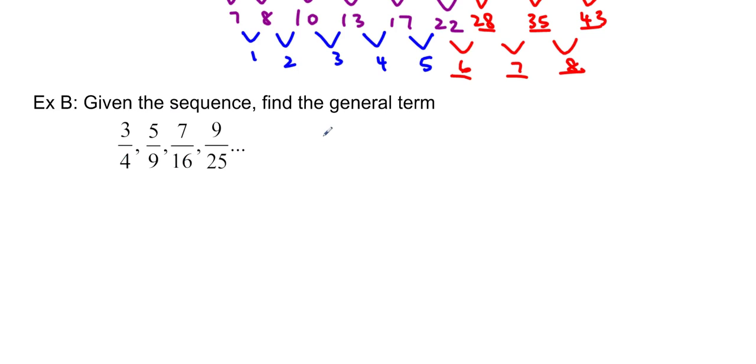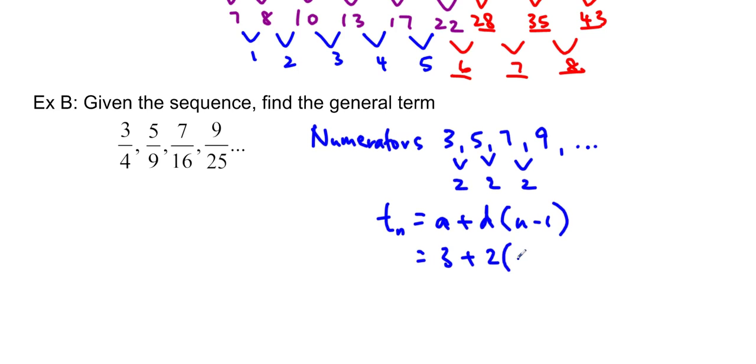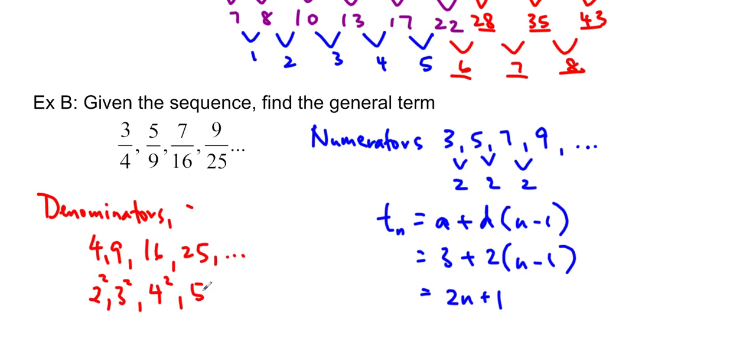So I'm going to treat them separately. Let's talk about the numerators first. The numerators are 3, 5, 7, 9. So I can see that this is an arithmetic sequence. T sub n is equal to a plus d times n minus 1, right? So in this case, a is 3 and d is 2. And if I simplify that, I'm going to get 2n plus 1.